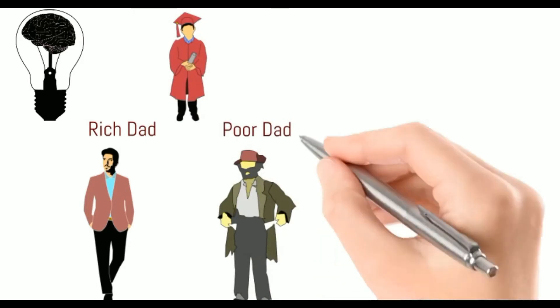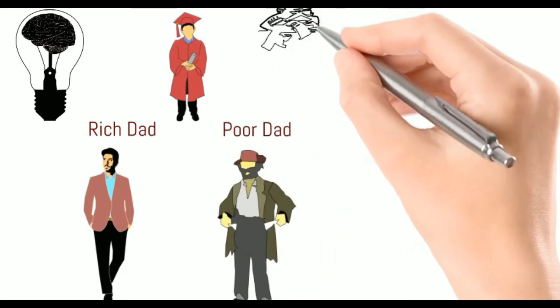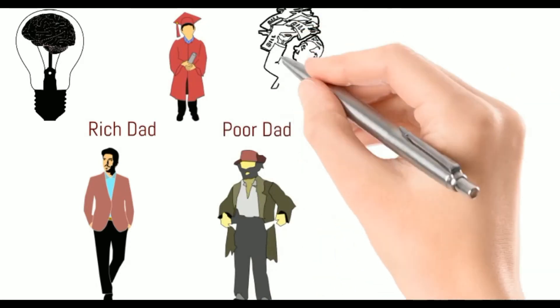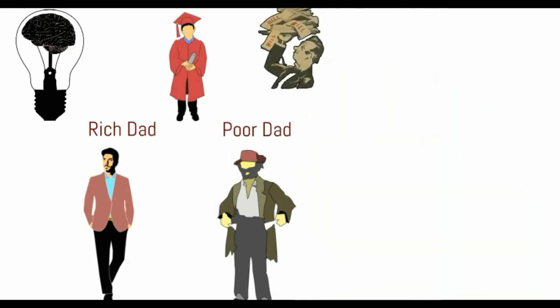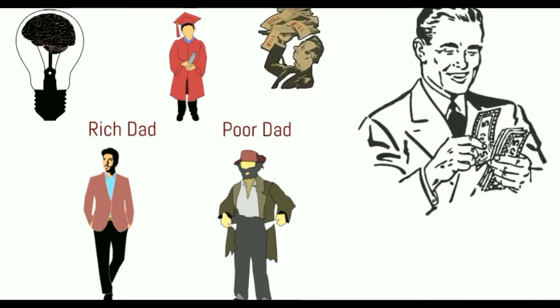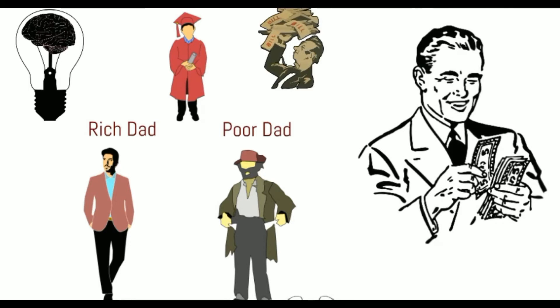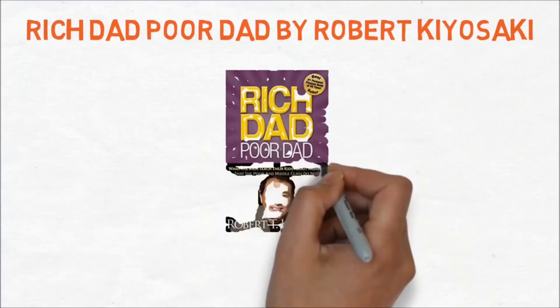Whereas the rich dad told Robert, the lack of money is the root cause of all problems. He advised Robert to find ways to buy all things he wanted. Instead of saying I can't afford it, ask how can I afford it, because this stimulates the brain to take action.